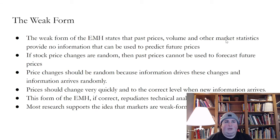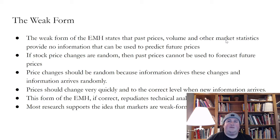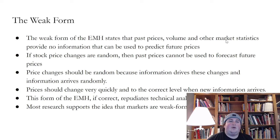The weak form of the EMH states that past prices, volume, and other market statistics provide no information that can be used to predict future prices. If stock price changes are random, then past prices cannot be used to forecast future prices. Price changes should be random because information drives these changes and information arrives randomly. Prices should change very quickly and to the correct level when new information arrives. This form of the efficient market hypothesis, if correct, repudiates technical analysis.